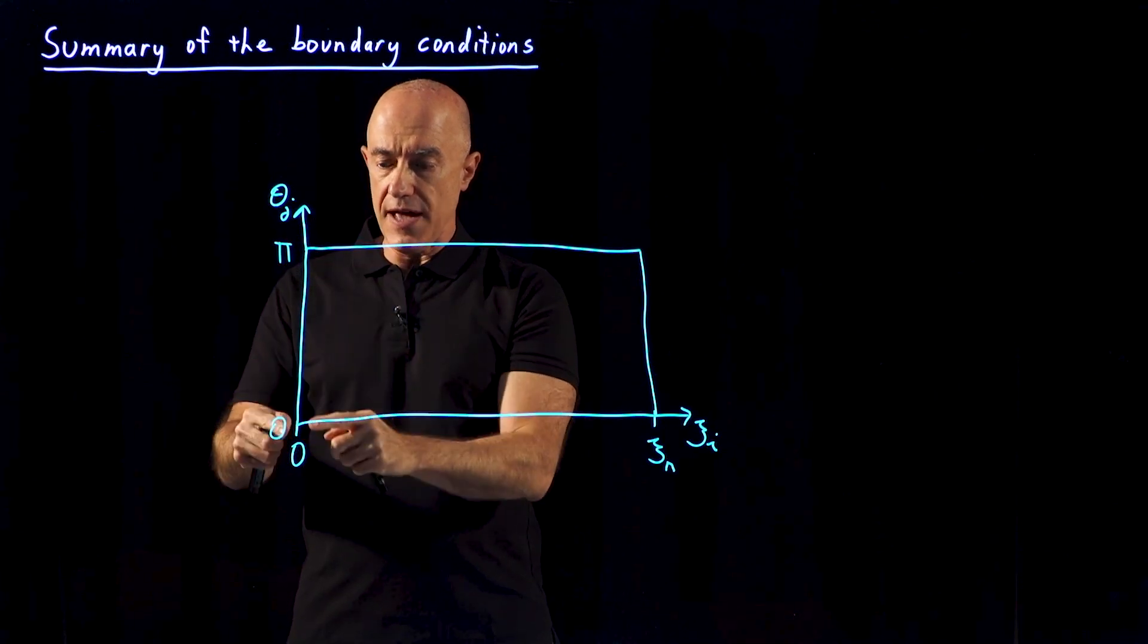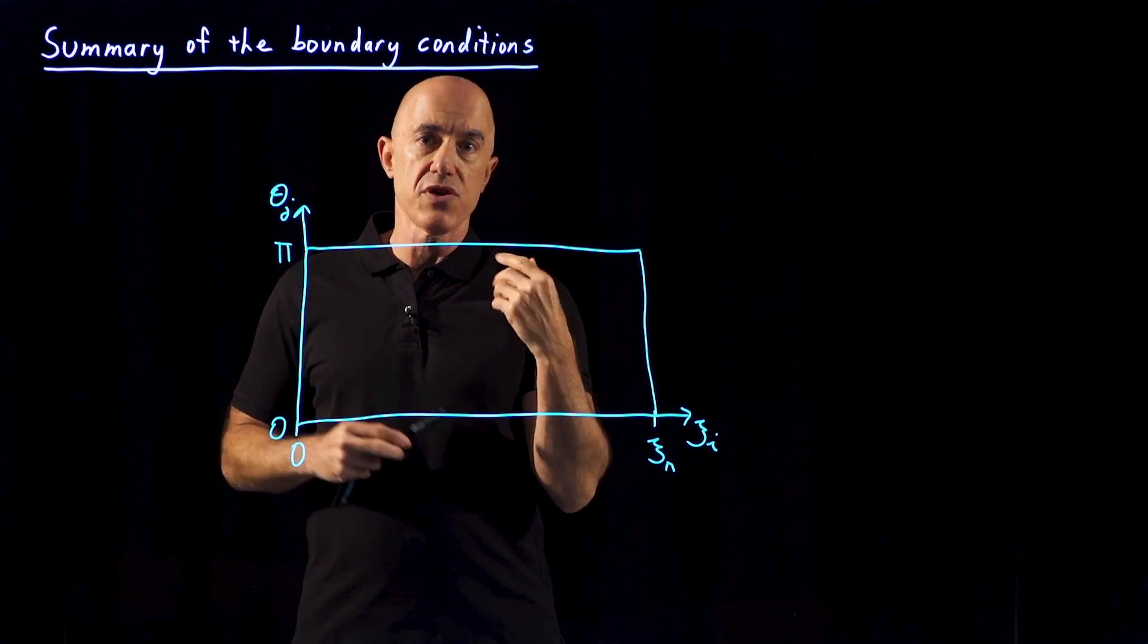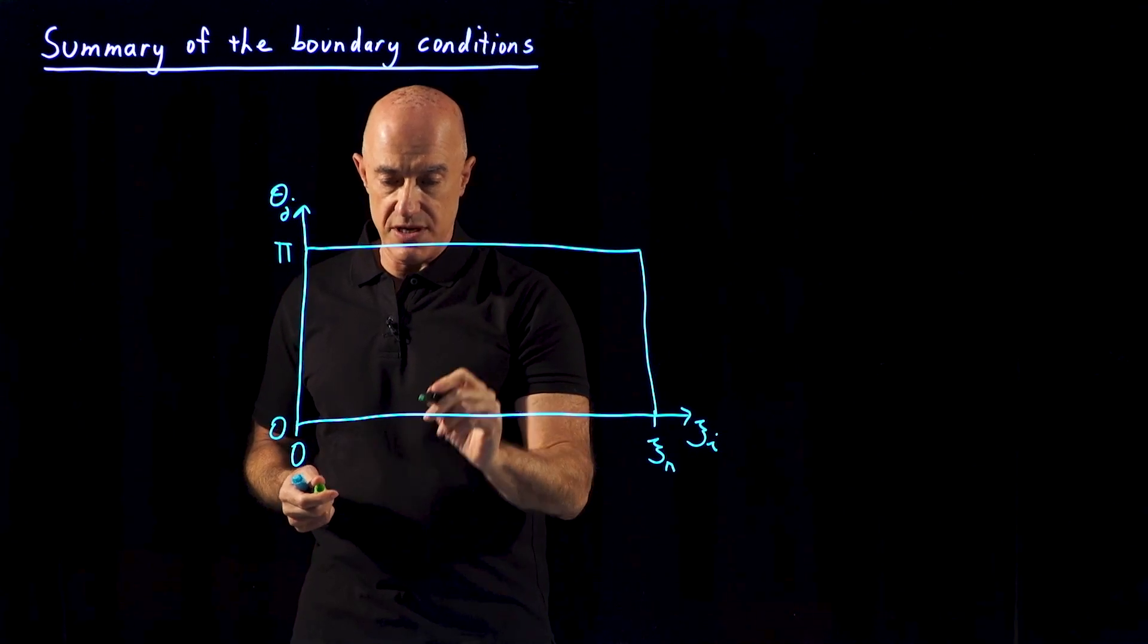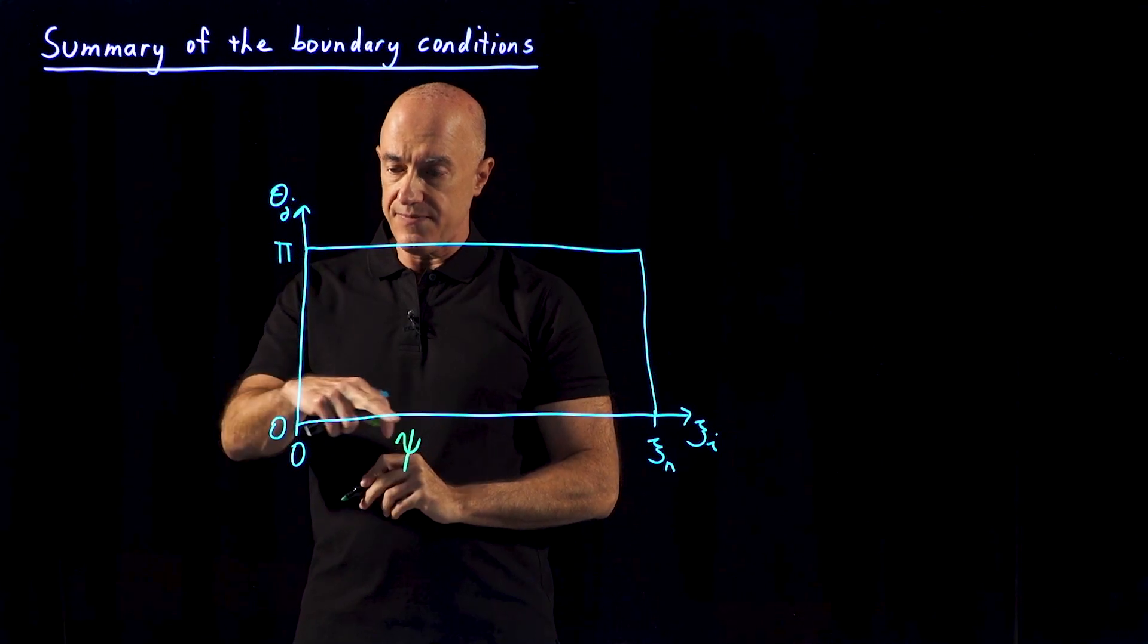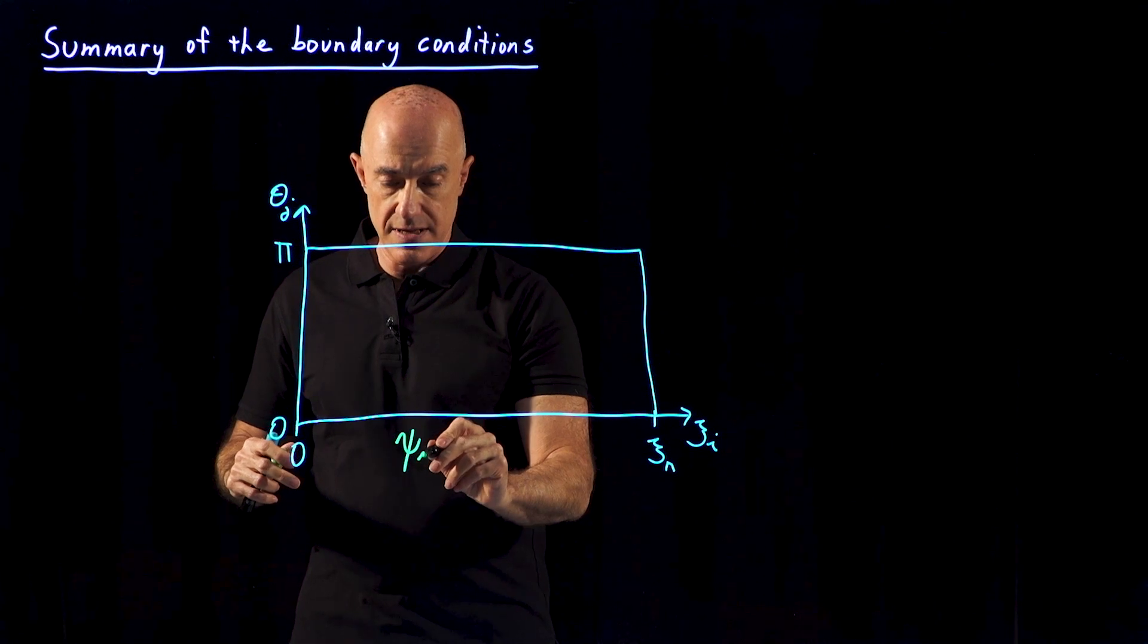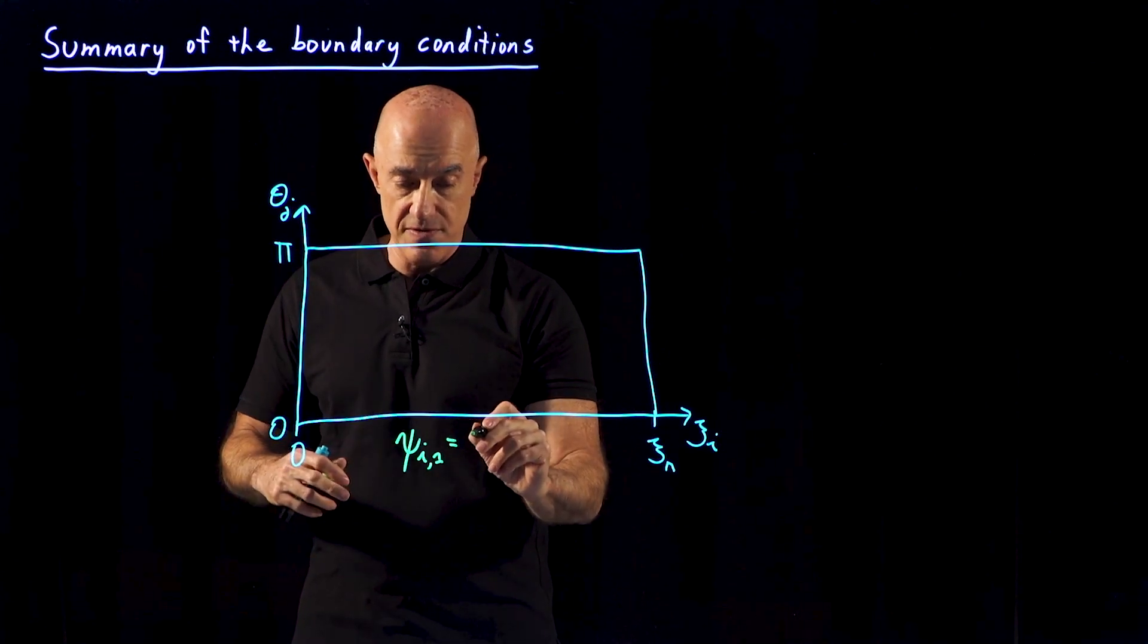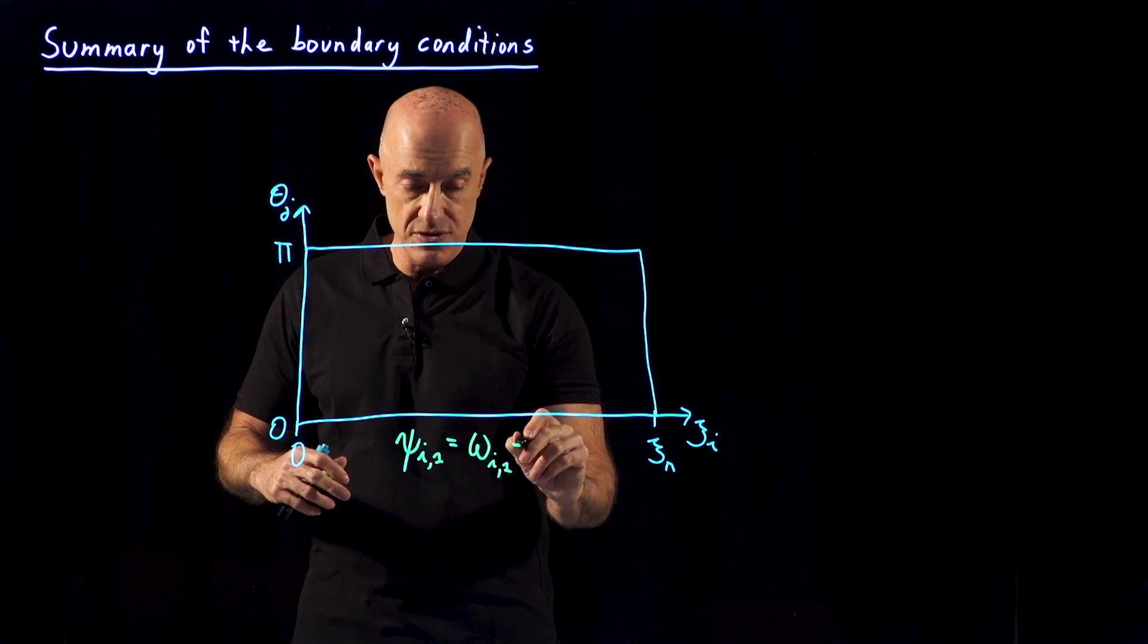When theta equals 0, this is on the midline. We know that the stream function and the vorticity are 0 on the midline. So this boundary condition on this side of the rectangle would be psi i1 equals 0 for all grid points in ksci. But also true for the vorticity, so omega i1 is also 0.